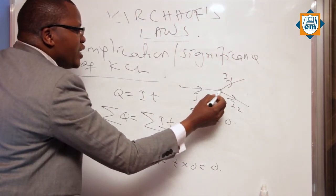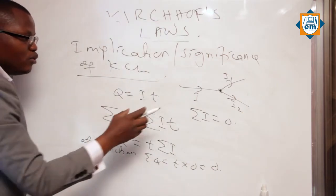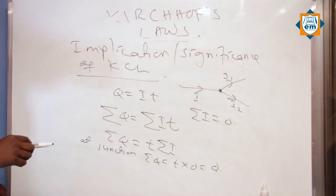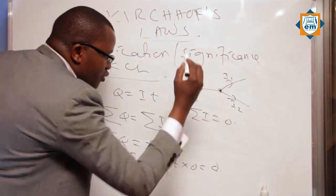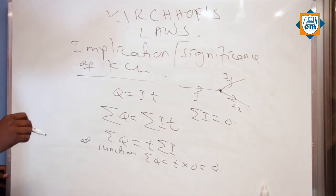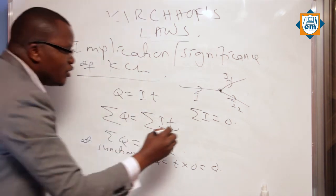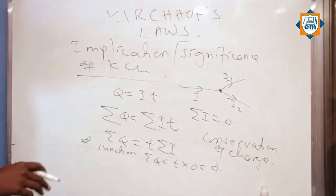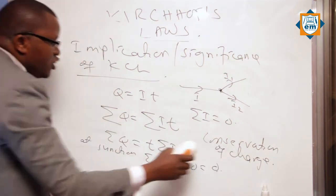Kwa hiyo inamaanisha hapa katika junction, hakuna charges zinazokusanyika. Hii inamaanisha hivi: charges zinazoingia ni sawa na charges zinazotoka, kwa sababu tumesema hapa katika junction summation of charge ni sawa na 0. Kwa lugha nyingine, hiyo tunaita conservation of charge — kwa sababu hakuna charges zinapotea; charges zinazoingia ni sawa na charges zinazotoka, hakuna charge yoyote inayopatikana katika junction. Kwa hiyo, if you are told to state or write the implication of KCL, unasema kwamba: KCL implies conservation of charges.